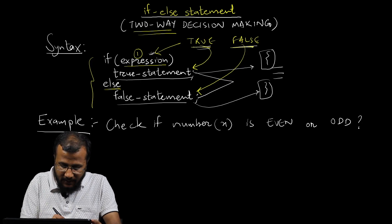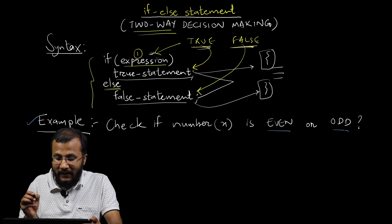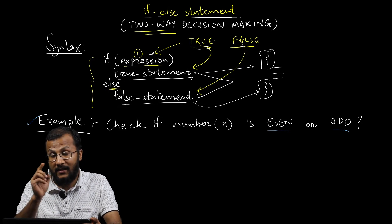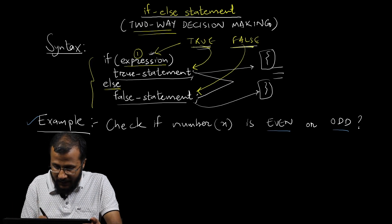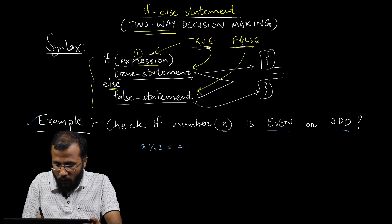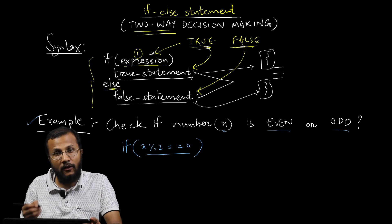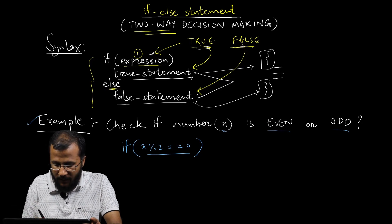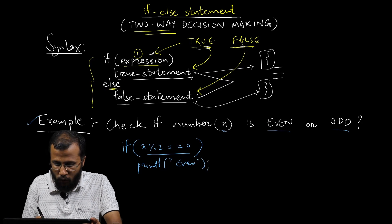Let's understand this with an example: checking if a number x is even or odd. First, think about what the expression should be. How do we check if a number is even or odd? We write: x % 2 == 0 to check if the number is even. This goes inside the if condition as the expression. If it evaluates to true, we go to the true statement — printf that the number is even — which executes only when the number is even.